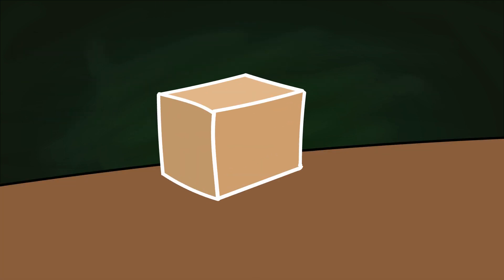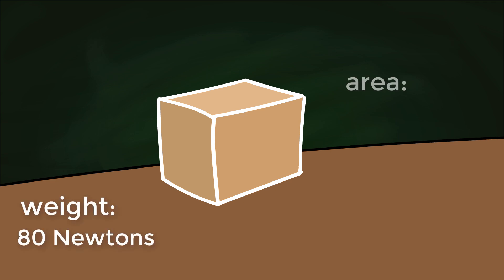Take this box for example. It has a weight of 80 newtons. The area of the box in contact with the tabletop is 2 square meters. We can see here 1 meter times 2 meters.